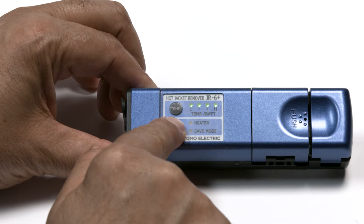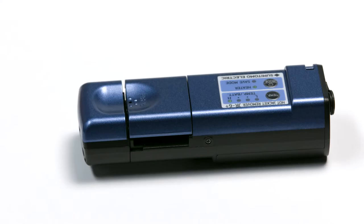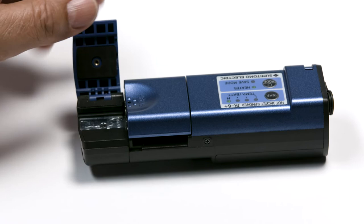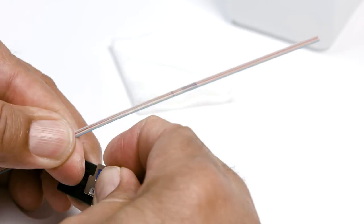This is how you prepare a ribbon fiber for splicing. Use the JR6 Plus Thermal Jacket Remover to remove the ribbon's matrix and fiber buffer.